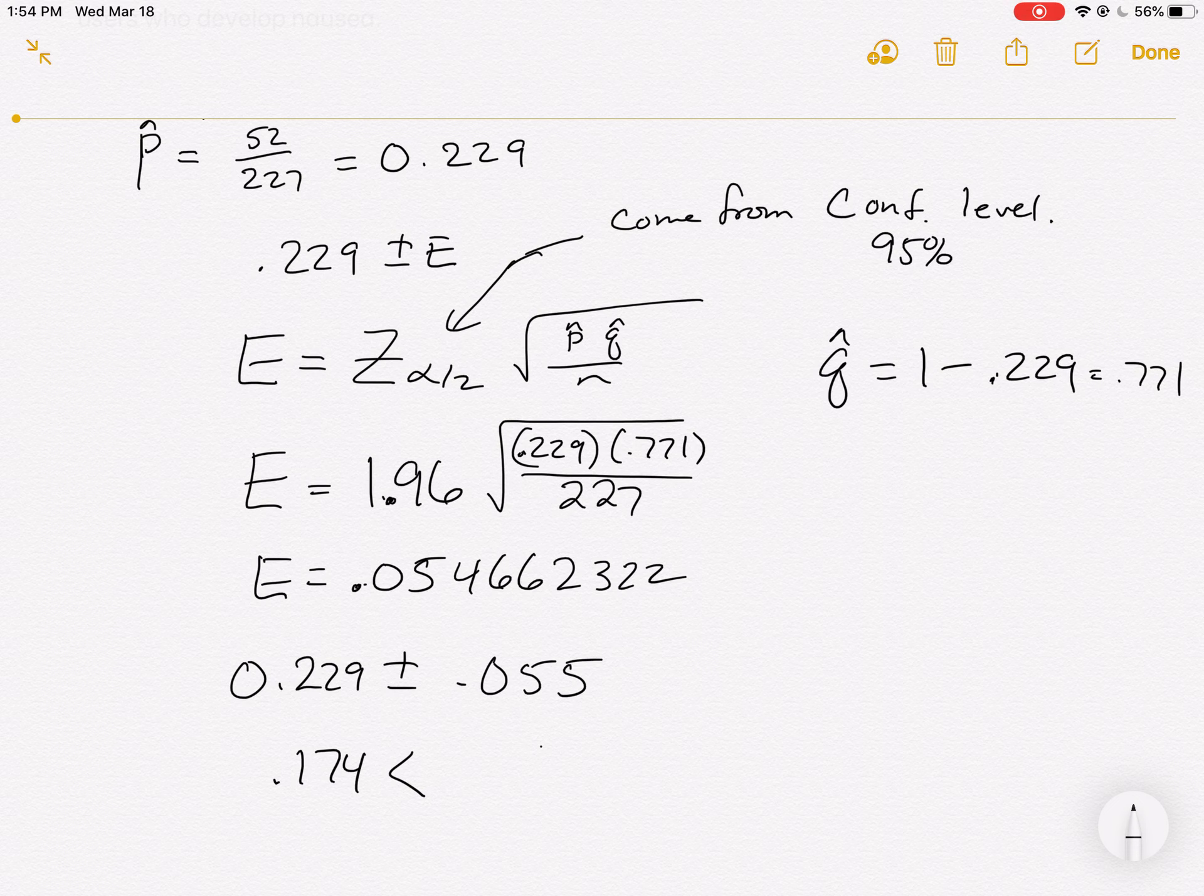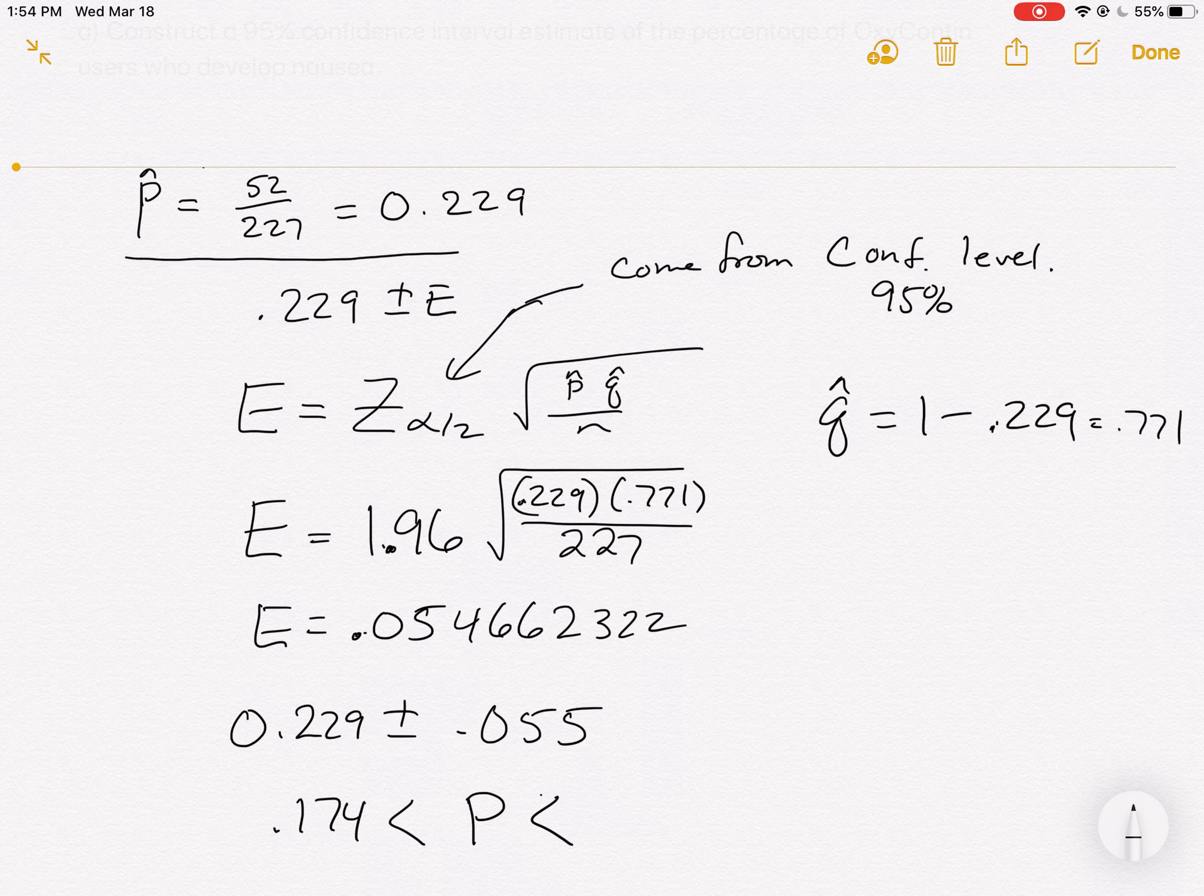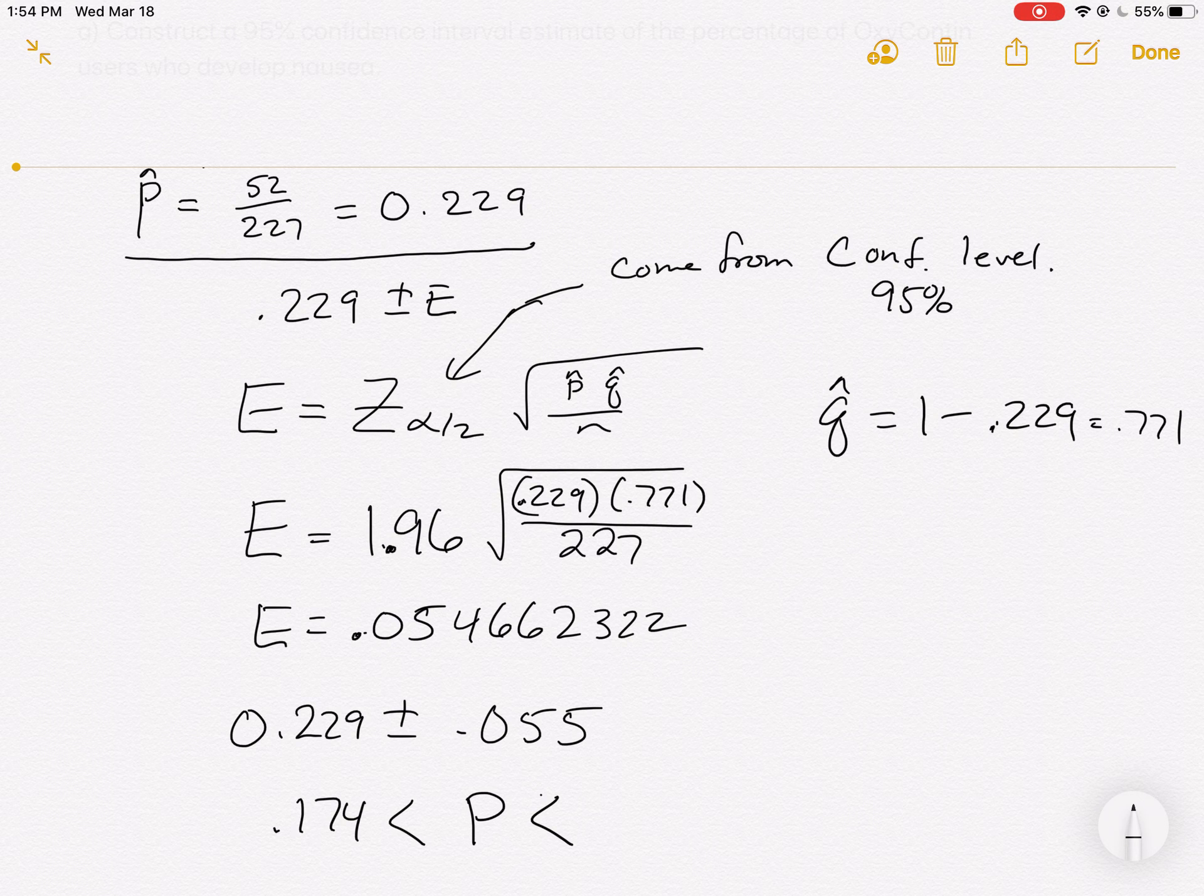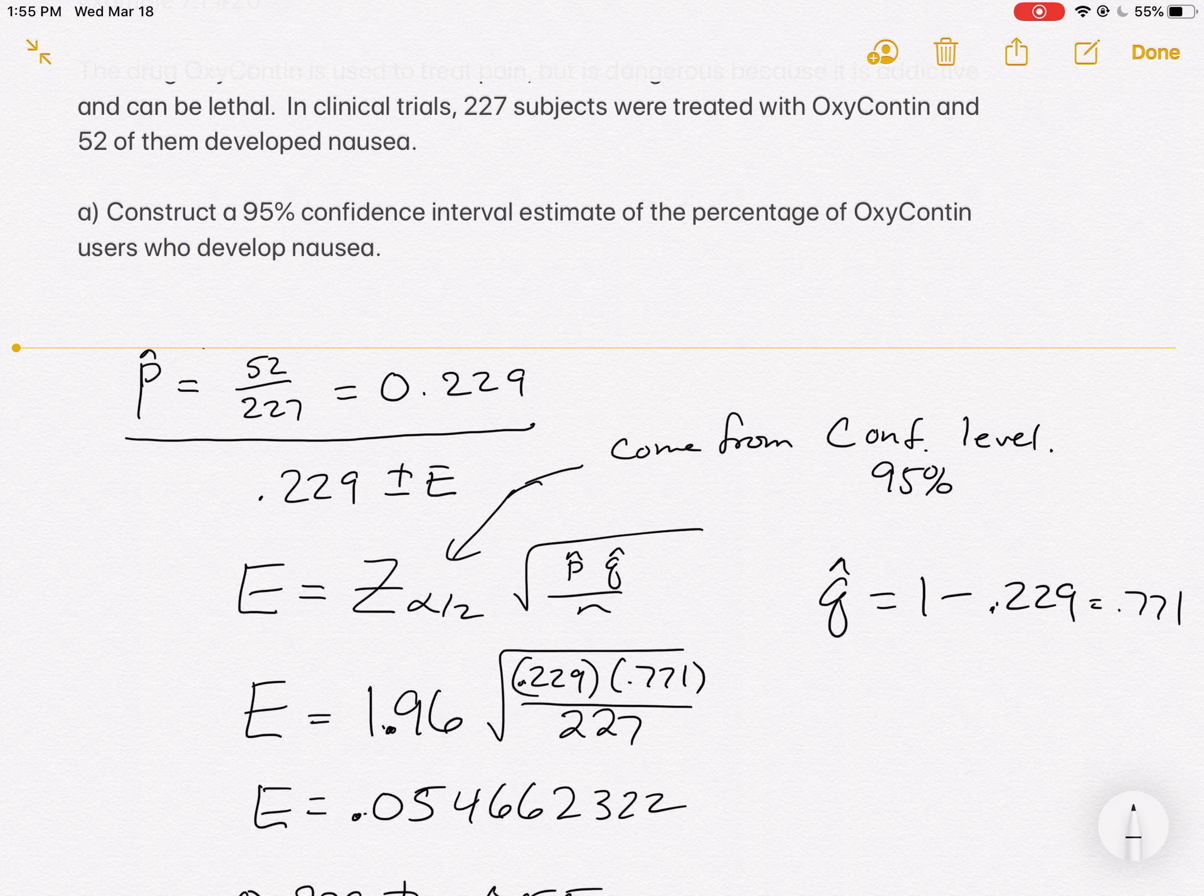Well, what's it going to be less than? What are we trying to estimate? We're trying to estimate p, not p hat. You'll lose points if you put a hat on that p because we know exactly what came out of the sample. Out of the sample came the p hat. We know that value. What we didn't know is what's happening for every person that takes OxyContin.